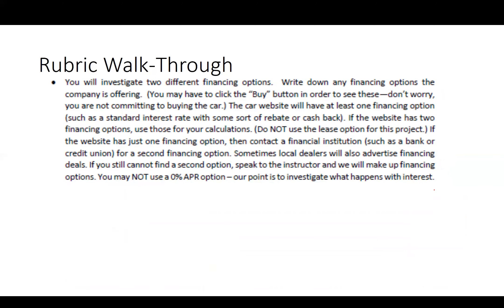You're going to investigate two different financing options. Write down any financing options the company is offering — sometimes dealerships offer two different ones. And I want to drive this home: if you click the Buy button, you are not committing to buying the car, so don't worry about that. Also, for the love of everything — please do not use a lease option. Don't lease a car. Just don't.